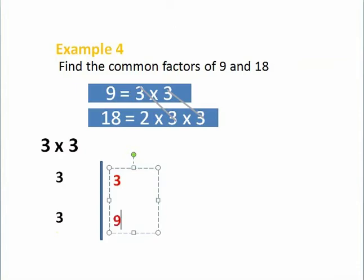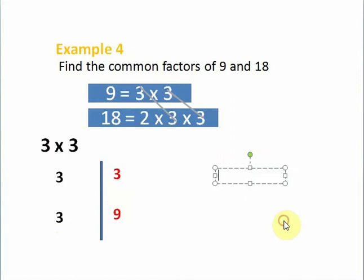Then we see this 3 multiplied by this 3 will give us 9. Is there anything again? No, we're done with the operation. So we say the common factors of 9 and 18...